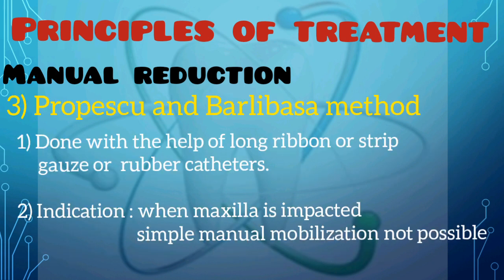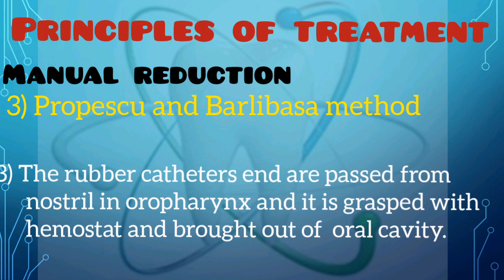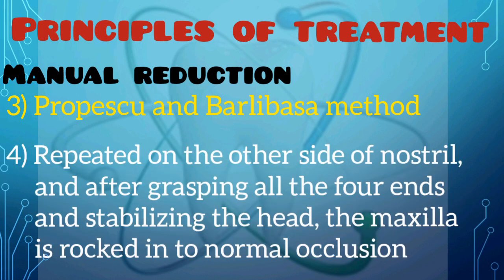The next method of manual reduction uses long ribbon or strip gauze or rubber catheters. Whenever the maxilla is impacted and simple manual mobilization is not possible, this method can be tried. The rubber catheter's end is passed from the nostril into the oropharynx and is grasped with the help of a hemostat and brought out of the oral cavity. This is repeated on the other nostril, and after grasping all four ends of the catheter and stabilizing the head, the maxilla can be rocked into normal occlusion.